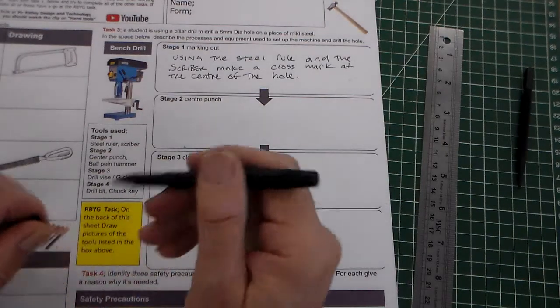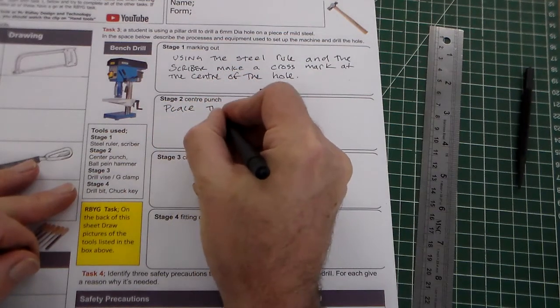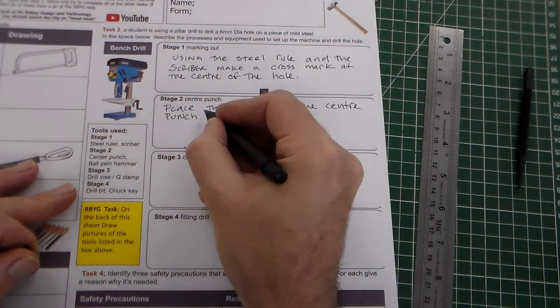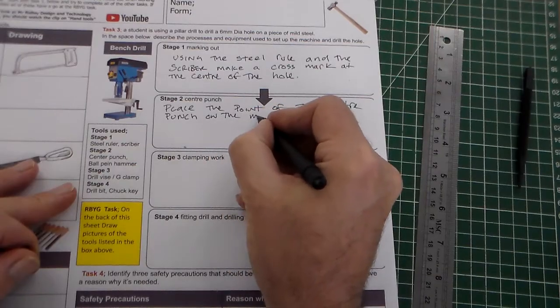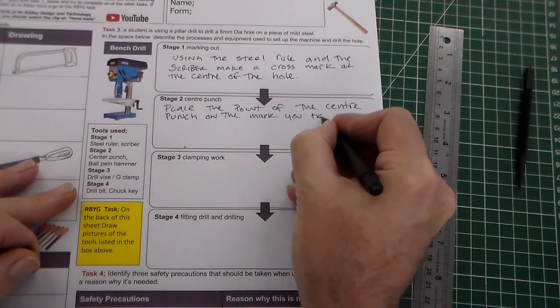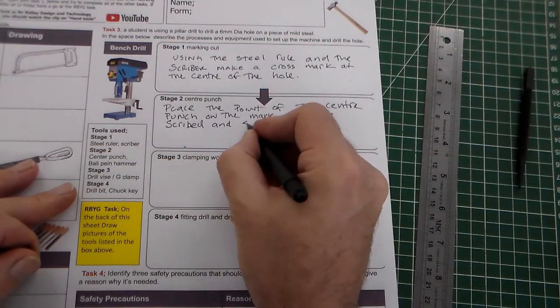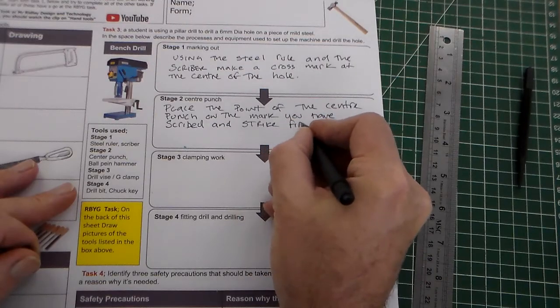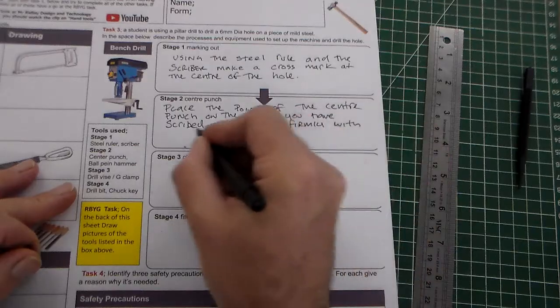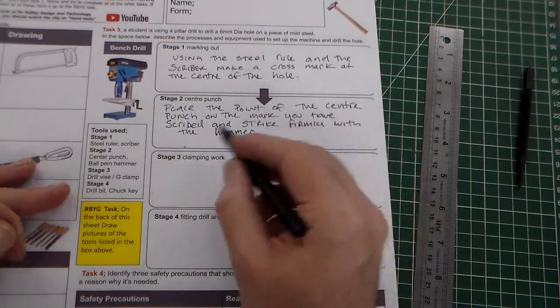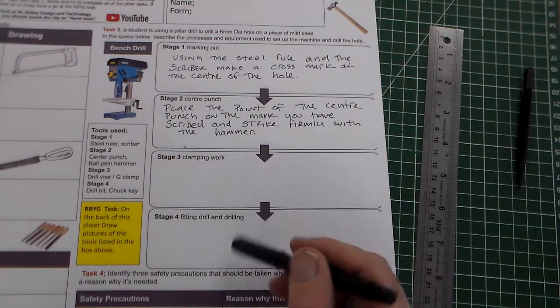So, this part of the question, it says, place the point of the center punch. What can we say, place the point of the center punch on the mark you have scribed, and strike firmly with the hammer. Okay. So, there you go. Place the point of the center punch on the mark you have scribed, and strike firmly with the hammer.